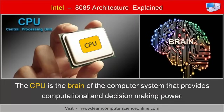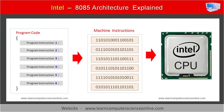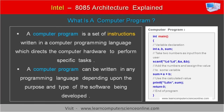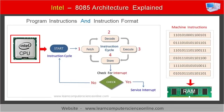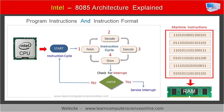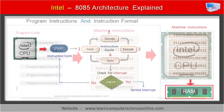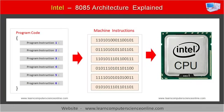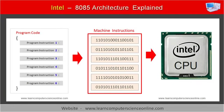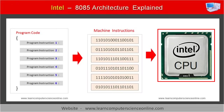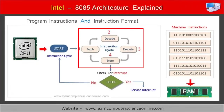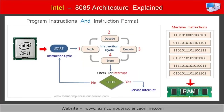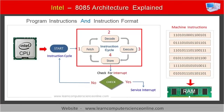The microprocessor is the brain of the computer system. Its main function is to execute programs. A computer program essentially consists of a set of instructions that directs the CPU to perform various operations. The program instructions are stored in main memory, RAM. Each instruction in memory is represented as a machine instruction in binary, which can be directly decoded and executed by the processor. The CPU initiates program execution by fetching, decoding, and executing each instruction one by one, in a cycle called the instruction cycle.